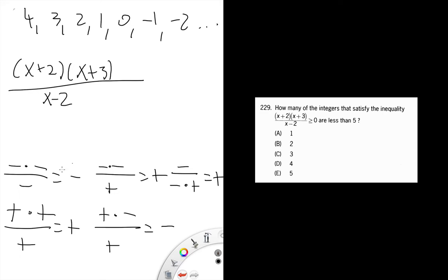If we choose four, it's pretty clear that everything's going to be positive, so that works. Three, again everything's going to be positive. If you choose two, you have a zero in the denominator which makes things undefined, so that's not going to work.